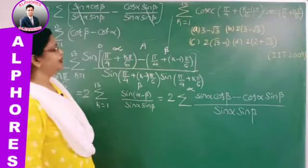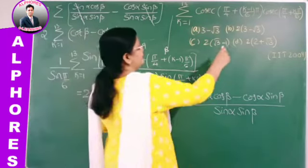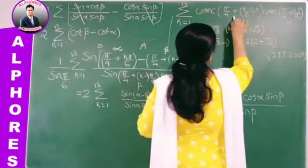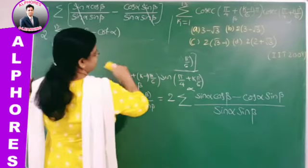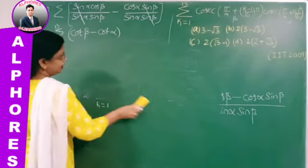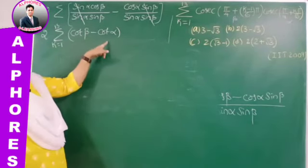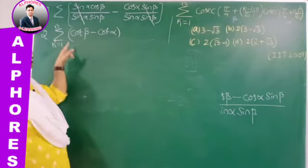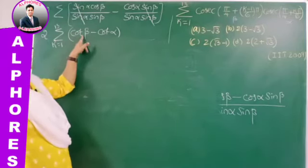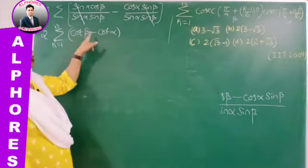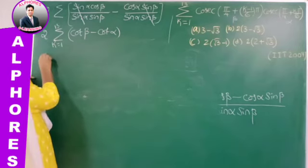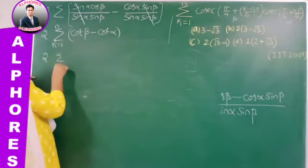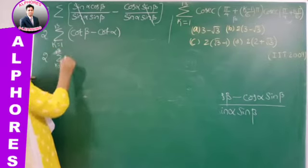cot(75°) equals tan(15°) by complementary angle, and tan(15°) = 2 − √3. So the expression is 2·[1 − (2 − √3)] = 2·[1 − 2 + √3] = 2·(√3 − 1). The final answer is 2(√3 − 1).